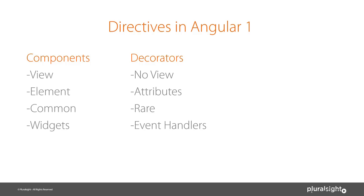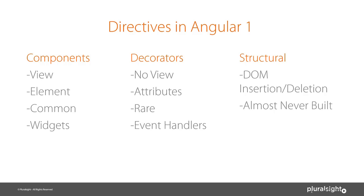The third type I call structural. These deal with DOM insertion and deletion, and are almost never built custom by developers. Good examples are ng-repeat and ng-if — directives that make significant manipulations to the DOM and pull pieces in and out. They're mostly written by the Angular team, very general purpose. So let's talk about directives in Angular 2 now that we understand the three kinds in Angular 1.